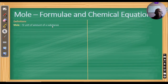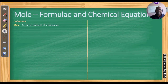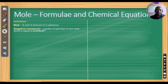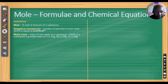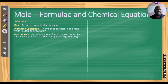We start with some definitions. We define the mole — it is a unit of amount of substance in an element, in a compound, in any substance. Avogadro's constant is the number of particles in one mole, and it is normally 6.023 × 10²³.